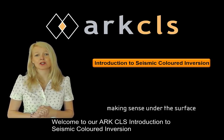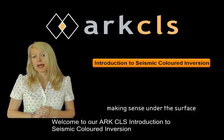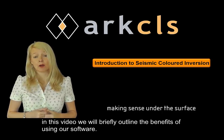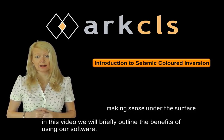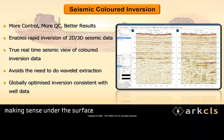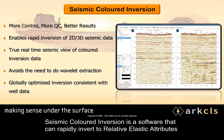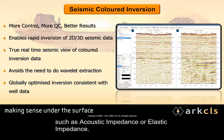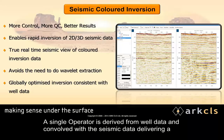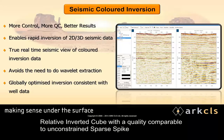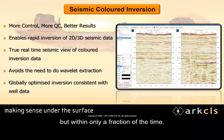Welcome to our ArcCLS introduction to seismic coloured inversion. In this video we will briefly outline the benefits of using our software. Seismic coloured inversion is a software that can rapidly invert to relative elastic attributes such as acoustic impedance or elastic impedance. A single operator is derived from well data and convolved with the seismic data, delivering a relative inverted cube with a quality comparable to unconstrained sparse spike but with only a fraction of the time.